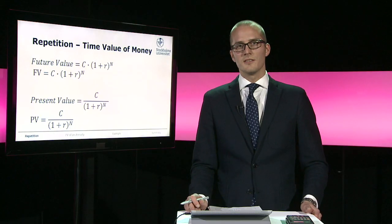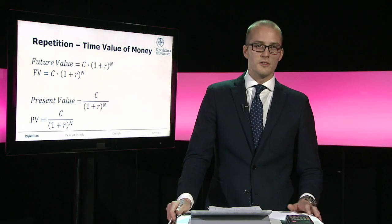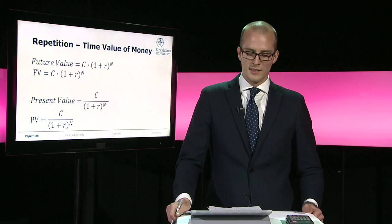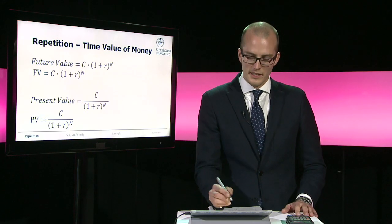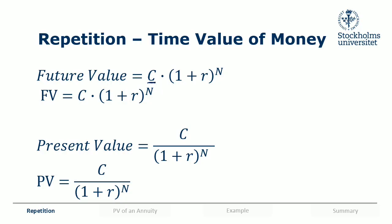To do this we had some formulas — the future value and the present value. The future value takes one cash flow today and multiplies it with one plus the interest rate raised to the power of N, where N is the number of years you want to move it. So getting C today is equally good as getting C times (1+r)^N in N years.